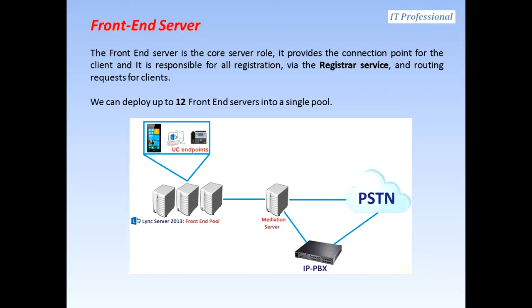Starting from the front-end server, which is the core server role — it provides the connection point for the client and is responsible for all registration via the registrar service and routing requests for clients. We can deploy up to 12 front-end servers into a single pool. A pool is a group of servers in the same role with identical configuration, and that's where we have failover and high availability.